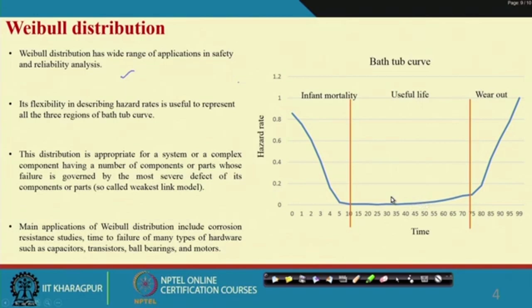Let us see some of the basics of Weibull distribution. It is an interesting distribution — it is a continuous distribution and it has a good relation with hazard rate, because it can describe the hazard rate with its beta parameter.